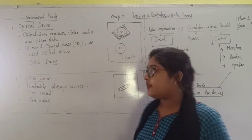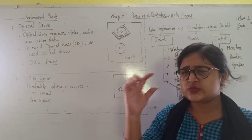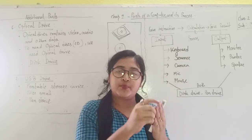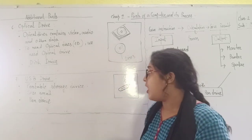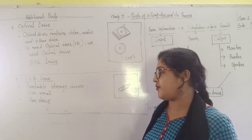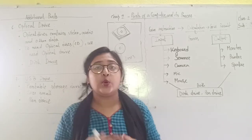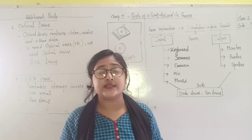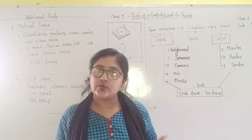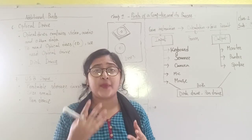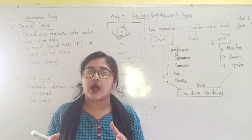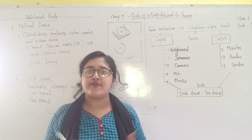Next is USB drive. What is USB drive? The picture is like this — very small. USB drive is very small, and we have to connect it to a computer, laptop, or mobile. It is one portable storage device, small in size. We call it pen drive. USB drive is literally known as pen drive. It is very small and portable storage, meaning you can store a lot of data in it and carry it anywhere with you. We use pen drive to store movies, games, songs, or any information or data — everything.